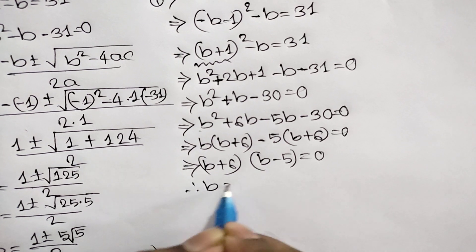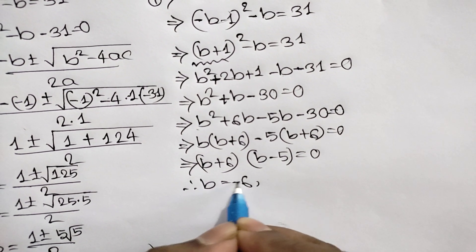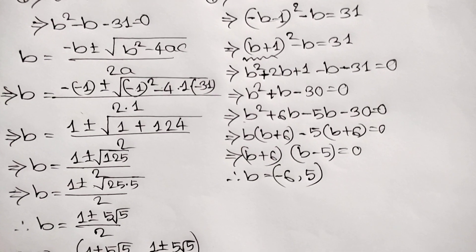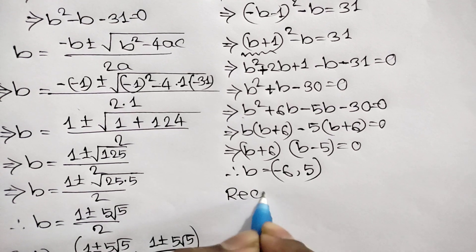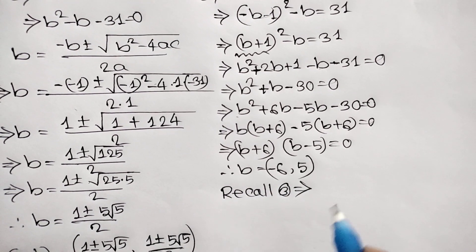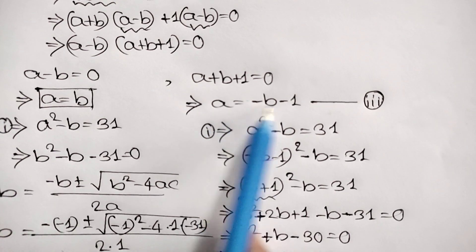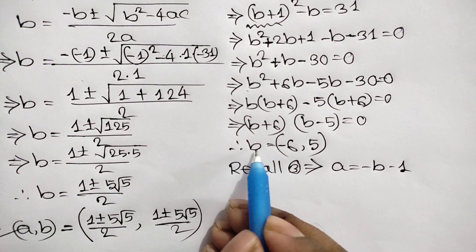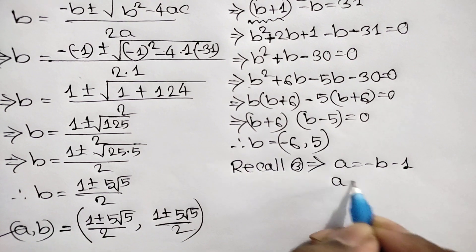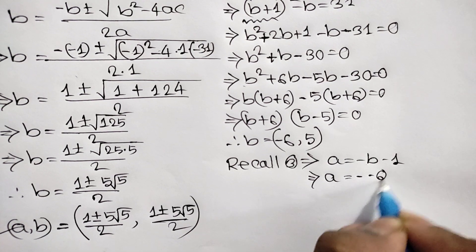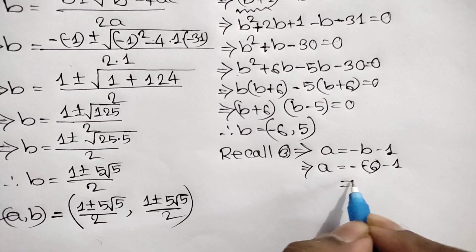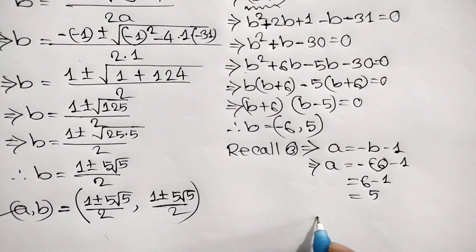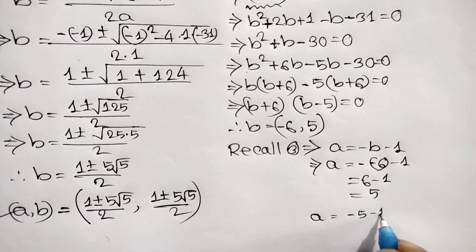So the values of B are negative 6 and positive 5. Recalling equation 3, A equals negative B minus 1. When B equals negative 6, A equals negative(negative 6) minus 1 equals 6 minus 1 equals 5. When B equals 5, A equals negative 5 minus 1 equals negative 6.